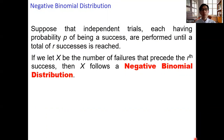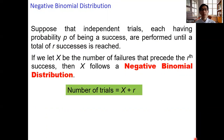So the negative binomial distribution is used to model the number of failures before the r-th success. The number of trials required equals the random variable x plus the number of successes you want. r is predetermined and x is a random variable. Therefore, the number of trials required to get r successes is also a random variable for the negative binomial distribution.